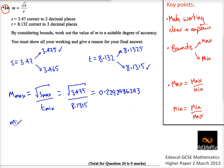Now, to get the minimum value, I'm going to do a very similar thing, except this time I'm going to choose the smallest value of s on top, and I'm going to choose the biggest value of t on the bottom. So for me, that's the square root of 3.465 divided by the biggest value, 8.1325.